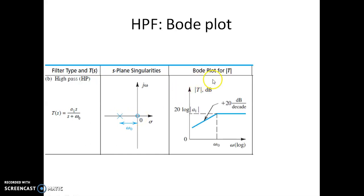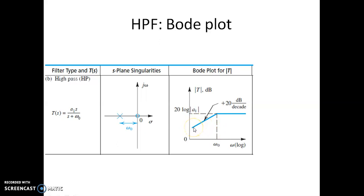This is the Bode plot of the high pass filter. It starts with a slope of plus 20 dB per decade because there is a zero at the origin, so from the beginning it has a slope of plus 20 dB per decade. Since we have a pole at minus omega-naught in the s-plane, at omega-naught in the frequency response, the slope changes from plus 20 dB to 0 dB per decade.